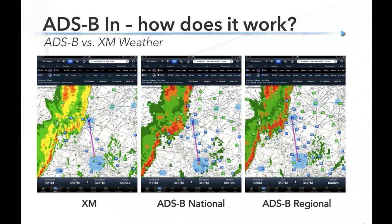Looking at the radar comparison in three ForeFlight screenshots — XM on the left, ADS-B National in the middle, ADS-B Regional on the right — the XM picture is nice and high definition with smooth contours. The ADS-B National product is blockier, kind of 1980s-looking. But the ADS-B Regional, within about 200 miles of your airplane, is much higher resolution. Practically speaking, from five years of flying with both ADS-B and XM, there's really not a practical difference. Nobody's going to fly through that line of weather no matter what the resolution is.